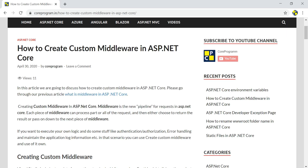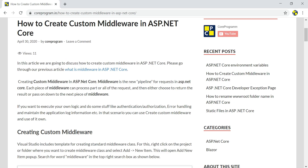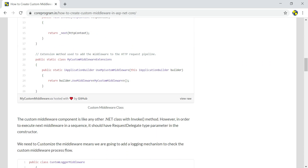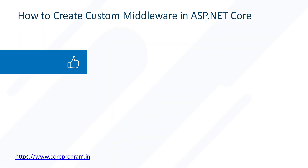For more details you can go through the Core Program article — the link is shared in the description box. Today in this video we discussed all the possible points of custom middleware. Hope it will help you on a real-time project. Do like and subscribe for more upcoming videos. Thanks for watching.